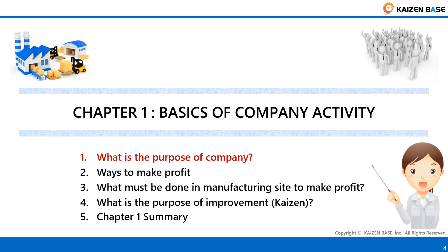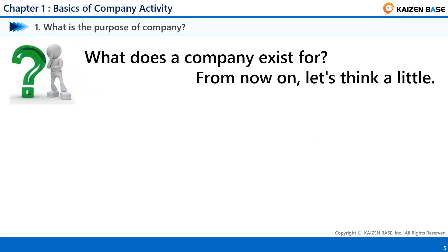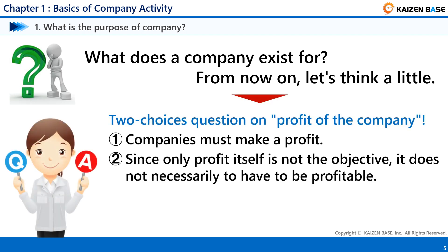First, let's check what is the purpose of a company. What does a company exist for? Let's think a little. There are two choices regarding the profit of a company. Which do you think is correct? 1. Companies must make a profit. 2. Since only profit itself is not the objective, it is not necessarily necessary to be profitable. Consider for 5 seconds.